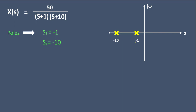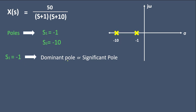As you can see, the pole at minus 1 is nearer to the origin compared to the pole at minus 10. So we can say s1 equals minus 1 is the dominant pole, also called the significant pole. The second pole s2 equals minus 10 is called the insignificant pole because it is far from the origin.